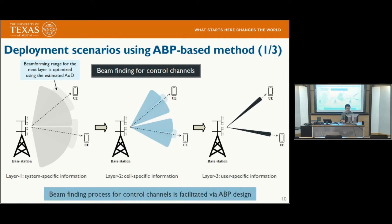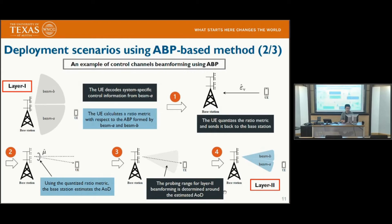The first application scenario is control channel beamforming. Since control channel communications require minimized delay, our approach's high-resolution estimation of the channel's directional information facilitates the beam-finding process. Compared to the grid-of-beam-based approach, the high-resolution angle estimates from our proposed method facilitate beamforming for control channels, reducing the excess delay of the network.